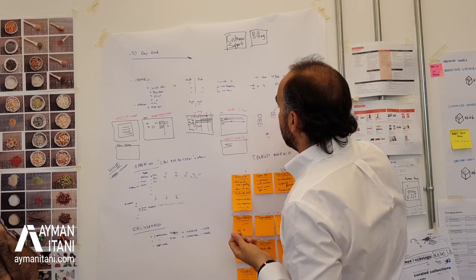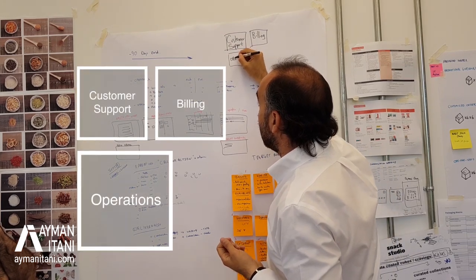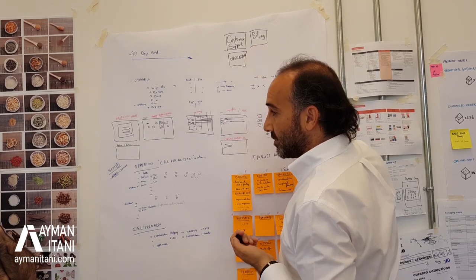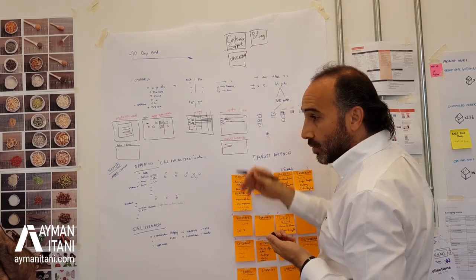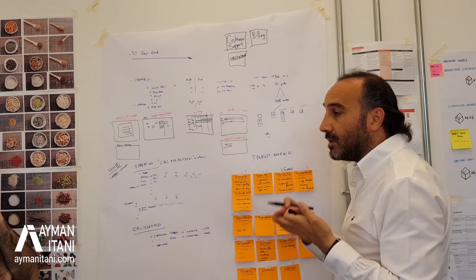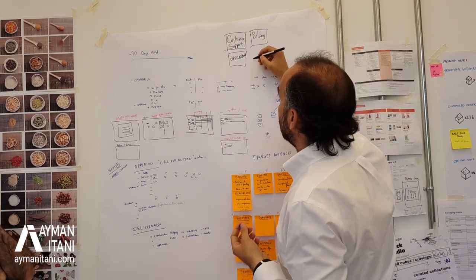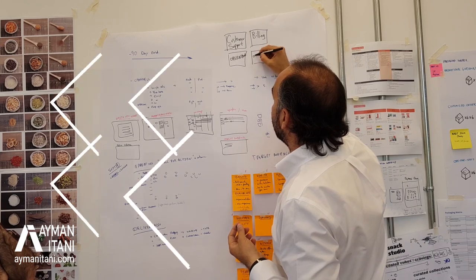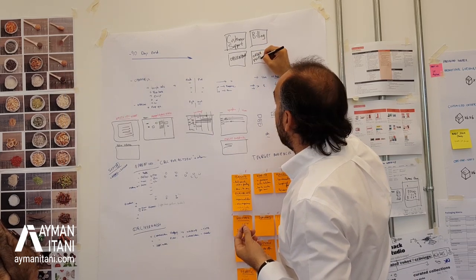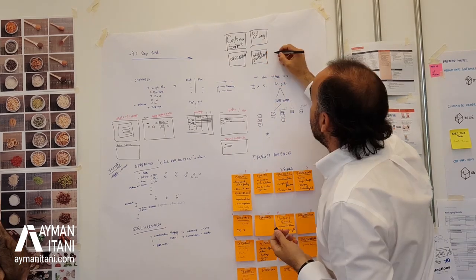Then you have operations, which is the actual creation of your product — especially if it's customized. This goes into packaging it properly, shipment, and delivery. You might want to have all fulfillment as a separate function or responsibility, so order fulfillment is one distinct role.